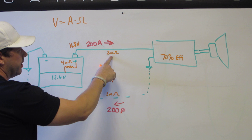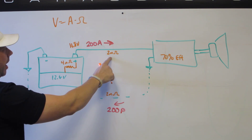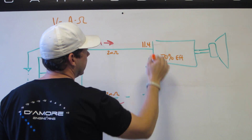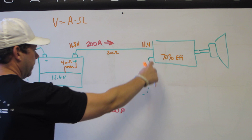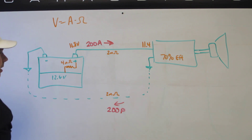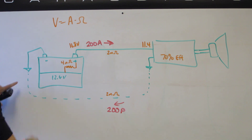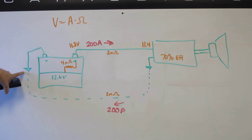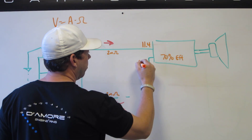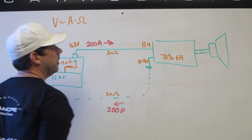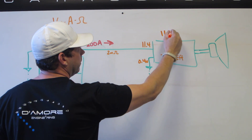Now, 200 amps across 2 milliohms of cable resistance gives a 0.4-volt drop, putting 11.4 volts on the amplifier positive terminal. Then we have 2 milliohms of resistance in the ground return path, so there's another 0.4-volt drop there. This point is ground — what we consider 0 volts — so relative to ground, that terminal is at 0.4 volts. Across the amplifier terminals, we're going to have 11.0 volts.